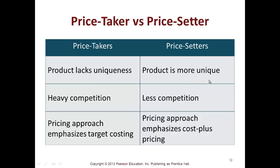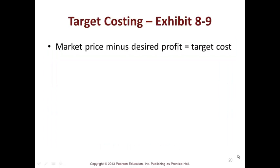A price setter has a more unique product with less competition, and the pricing approach emphasizes cost-plus pricing. For example, lucky brand jeans that cost $200 — it's a unique product with less competition, so they are a price setter. Target costing from Exhibit 8-9: market price minus desired profit equals target cost. Your market price minus what you want as profit is your target cost — it is not break-even.